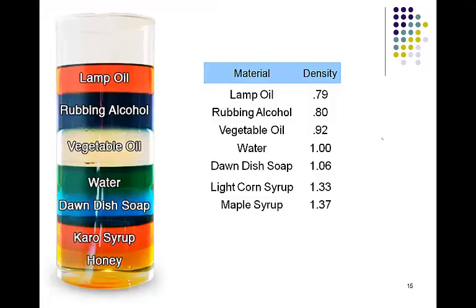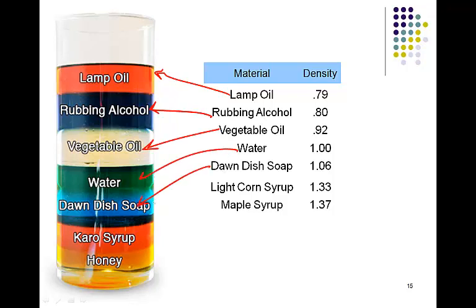We can actually use this to create rainbow columns using liquids of different densities. This rainbow column is made up of lamp oil, rubbing alcohol, vegetable oil, water, soap, corn syrup, and maple syrup — and notice their densities are all different. Lamp oil is the least dense, so it's on top, followed by rubbing alcohol, vegetable oil, water, soap, corn syrup, and maple syrup or honey on the bottom — the highest density.